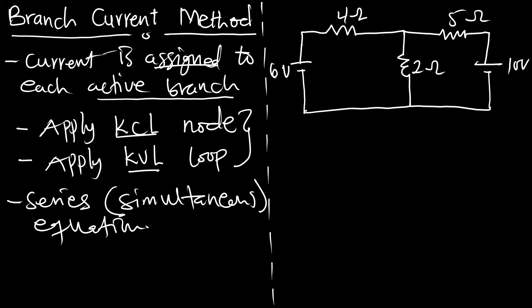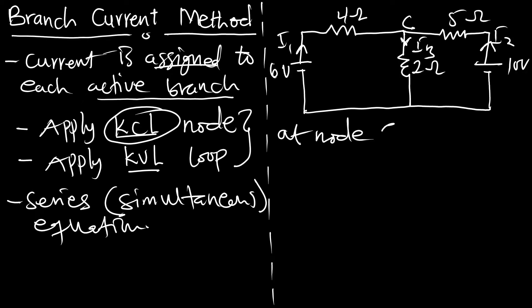Current flows from each source through the circuit. We label the branch currents as I1, I2, and I3. Applying KCL at node C, the current entering equals the current leaving, so I3 equals I1 plus I2. This is equation one.